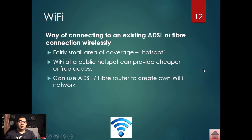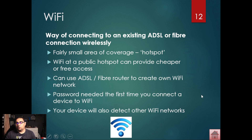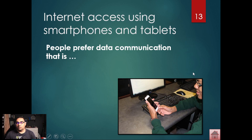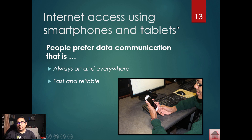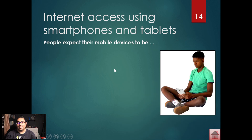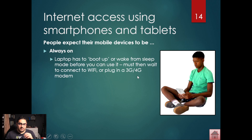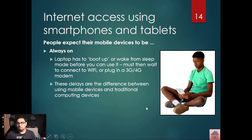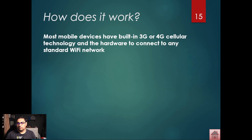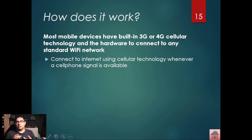On the Wi-Fi side, know what a hotspot is and what your router does at home — remember, your router provides a wireless network environment in that area. Internet access using smartphones and tablets is covered here too. They'll talk about 3G, 4G, and 5G — it's just the next generation, which means it's faster. That's the main thing behind it.